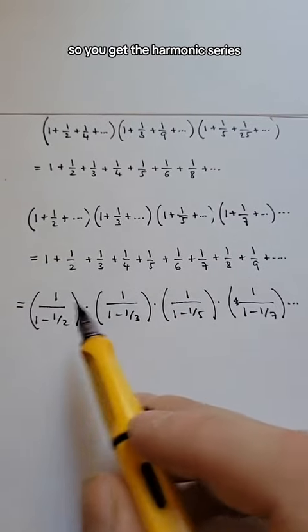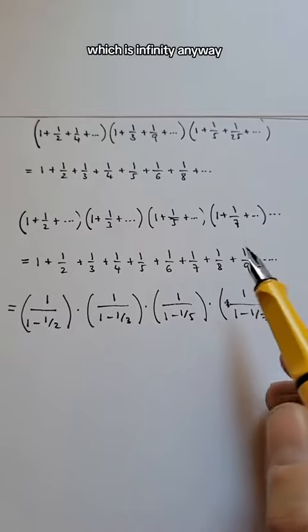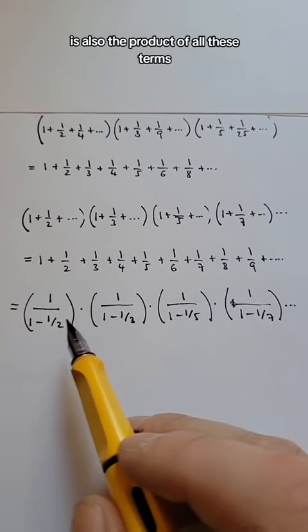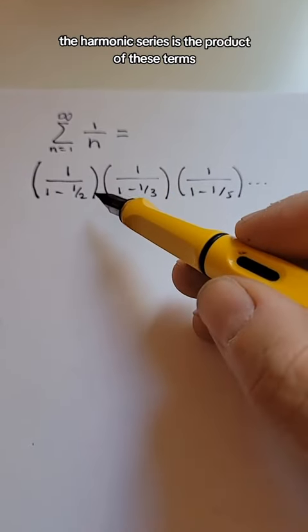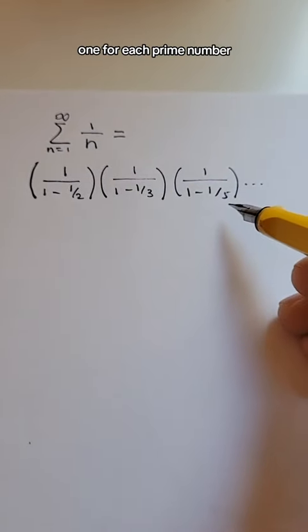So you get that the harmonic series, the sum of it, which is infinity anyway, is also the product of all these terms. So once again, the harmonic series is the product of these terms, one for each prime number.